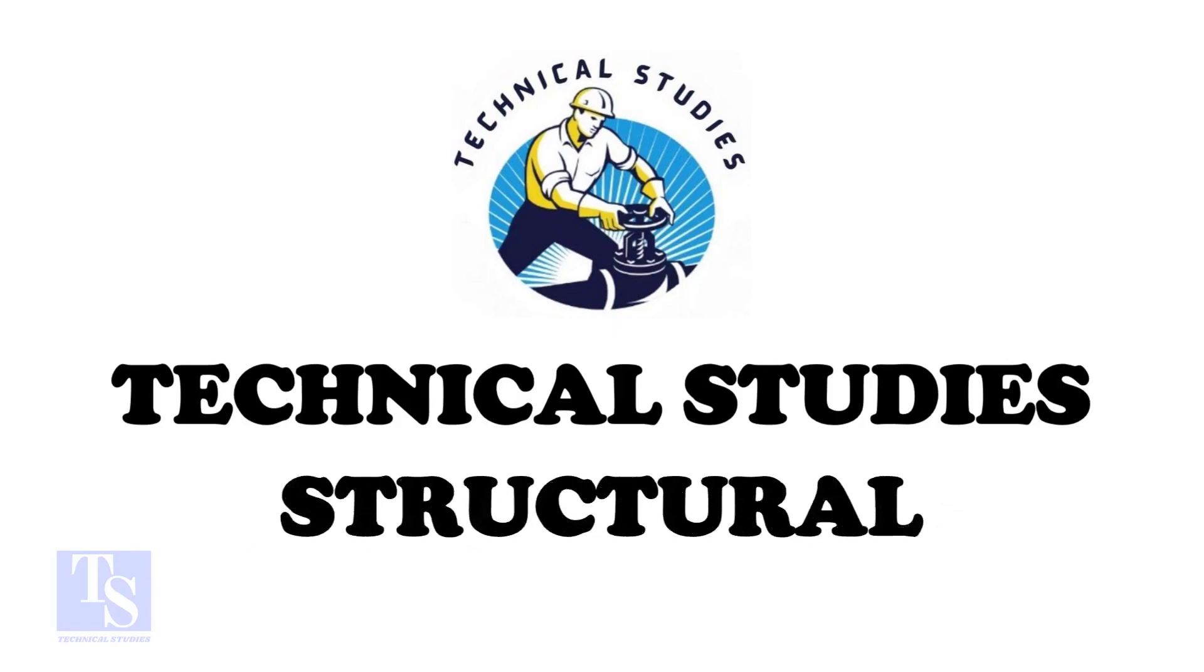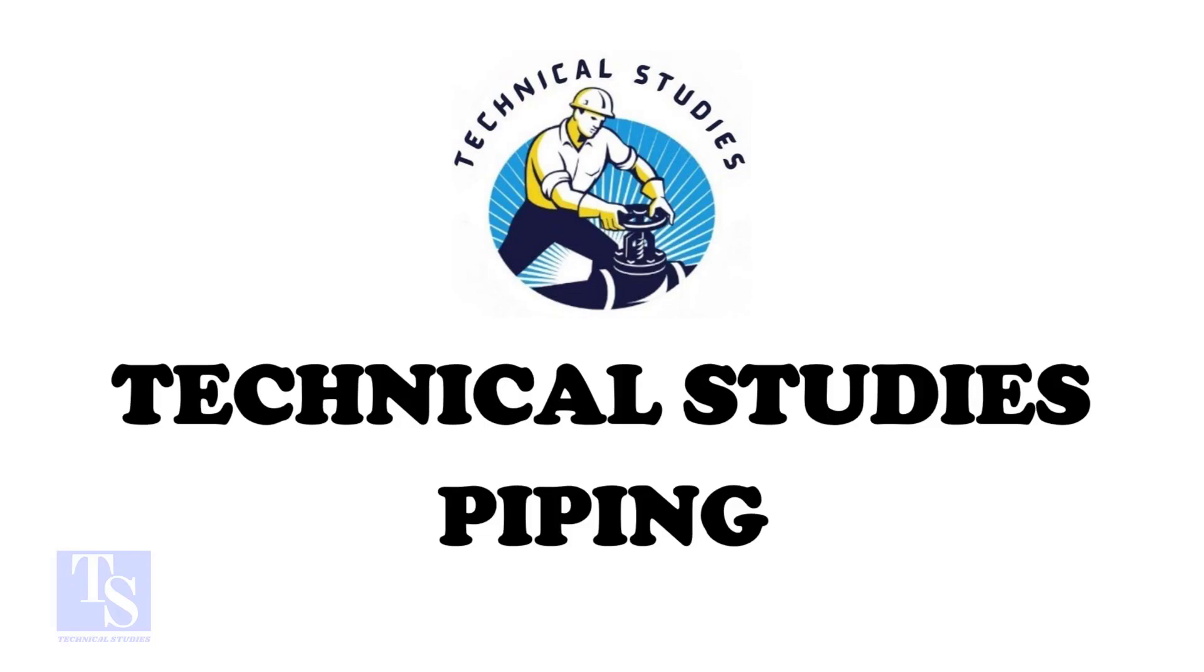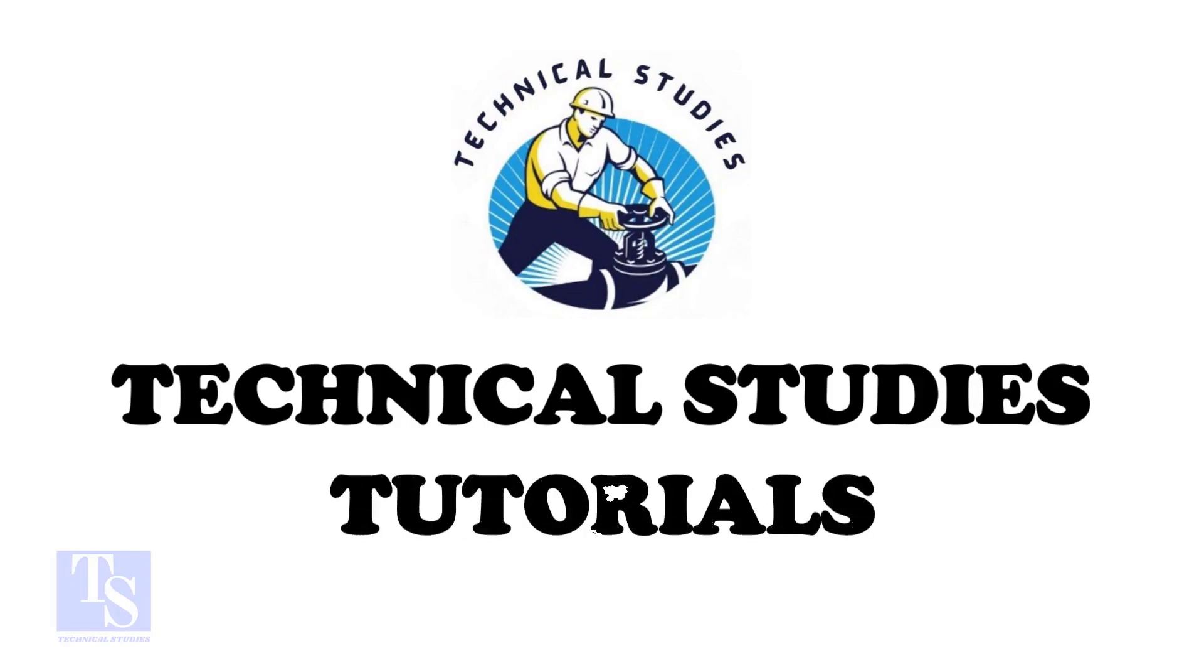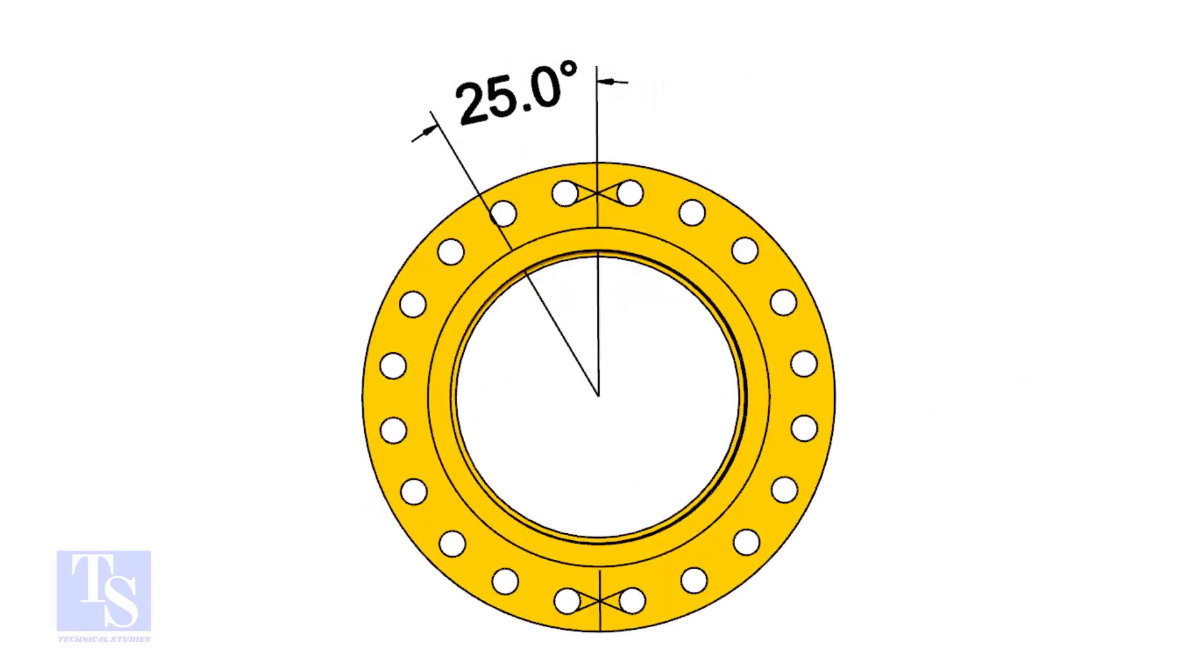I choose a slip-on flange for the example, but the calculation and the procedure are same for all flanges. The pipe and the flange size is 16 inch, and the flange will rotate 25 degrees anticlockwise.